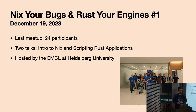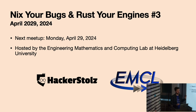Our last meetup, and our first of the series, was last December in Heidelberg, together with the EMCL of Heidelberg University. We had 24 participants in total, two talks. The first one was about an introduction to Nix by Vanessa, and the second was about scripting Rust applications with JavaScript, Python, and Lua. Our next meetup after this one is going to be on April 29th, again in Heidelberg, at the Engineering, Mathematics, and Computing Lab. I would be happy to see some more of your faces again there.